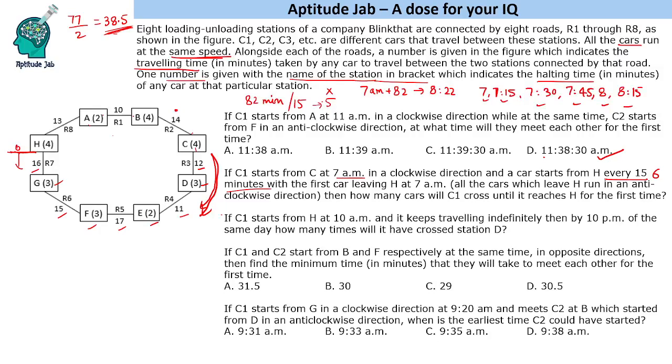Next question says, if C1 starts from H at 10 AM and it keeps traveling indefinitely, then by 10 PM of the same day, how many times will it have crossed station D? A car starts from H at 10 AM. First of all, it keeps traveling, that means it is completing cycles. So let's find the cycle time.